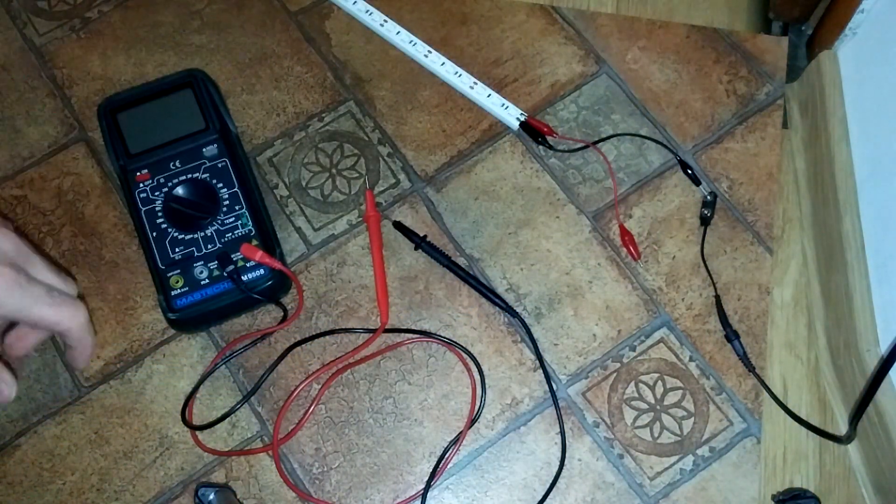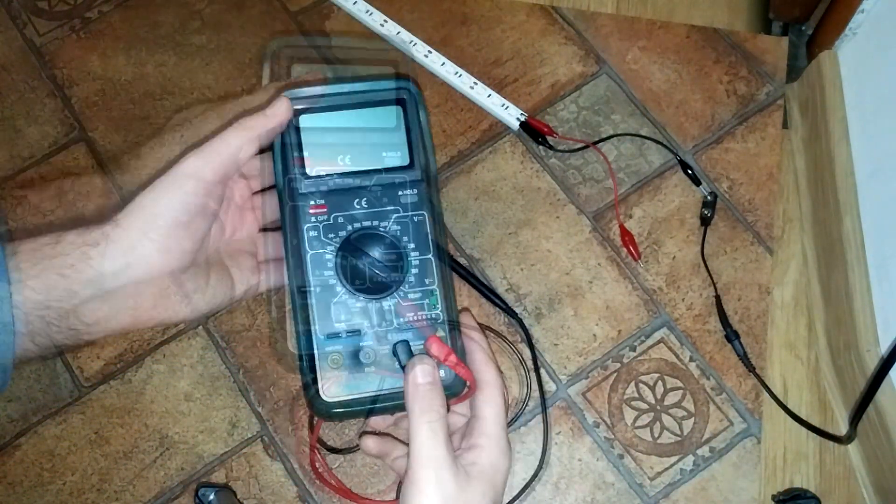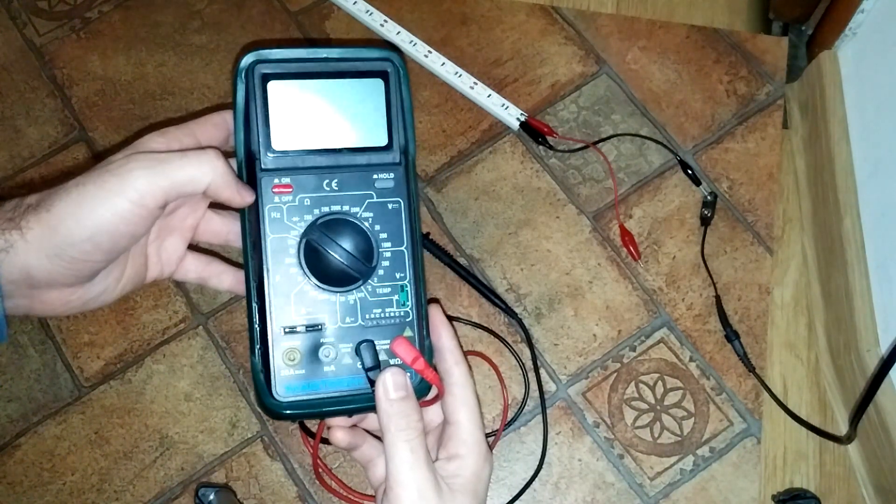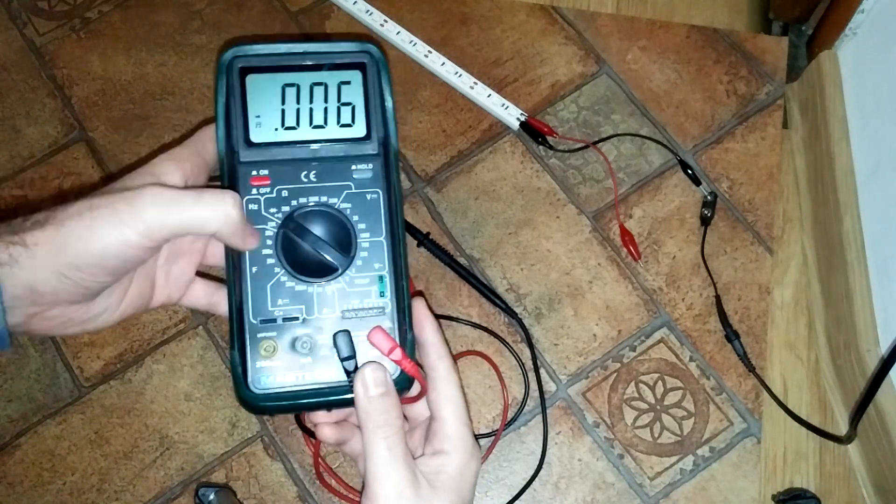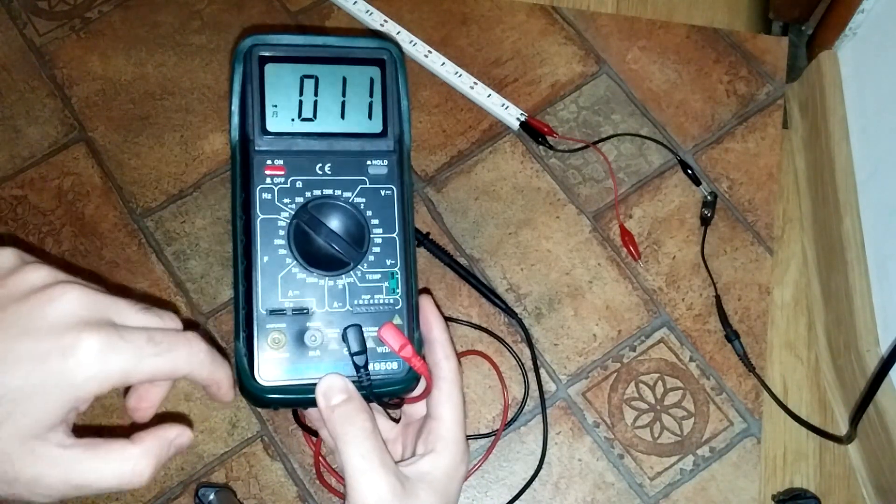For example this one has an on off switch, this one the red one. Okay, now we have to rotate this one to amps.